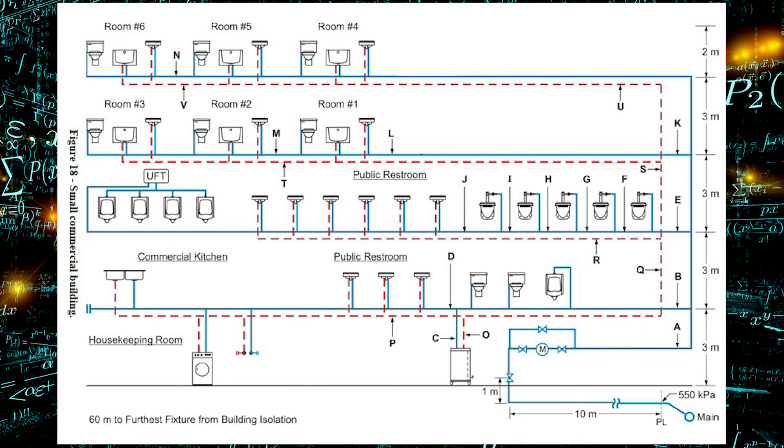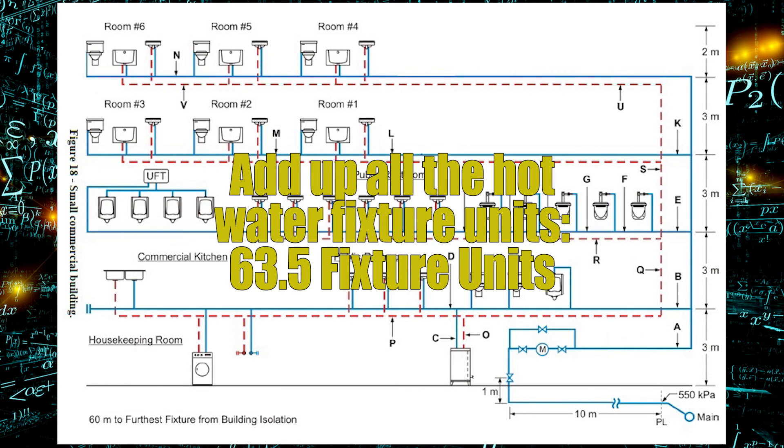At this point you need to go and add up your hydraulic load or your fixture unit load for all the different portions of piping throughout the system. I like to do hot water first when I'm doing distribution sizing because it's easier. Let's look at pipe O. That's the hot water pipe coming out of the hot water tank. To size this up I need to add up all the hot fixtures in the building, which equals 63.5 fixture units.